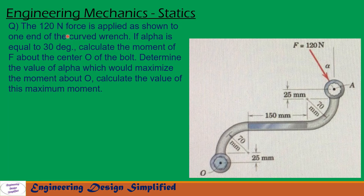Today's problem: a 120 Newton force is applied as shown to one end of the curved wrench. If alpha is equal to 30 degrees, calculate the moment of F about the center O of the bolt. Determine the value of alpha which would maximize the moment about O, and calculate the value of this maximum moment.